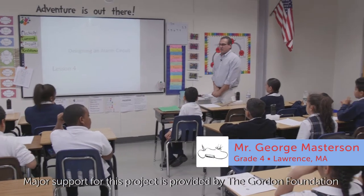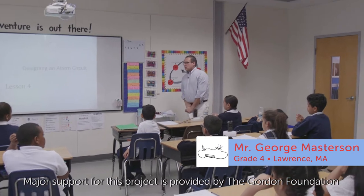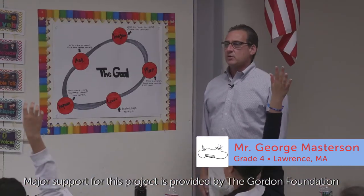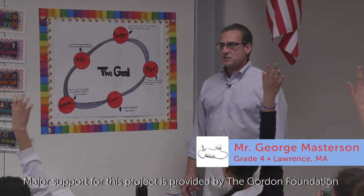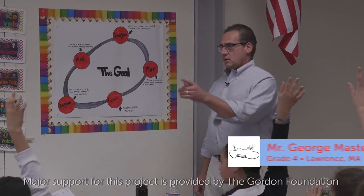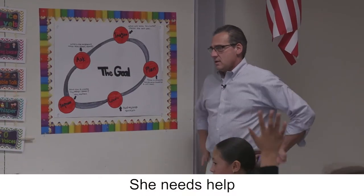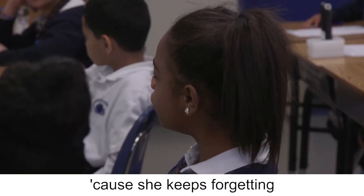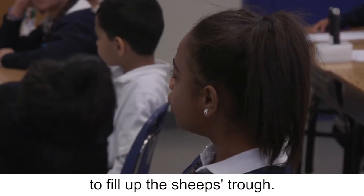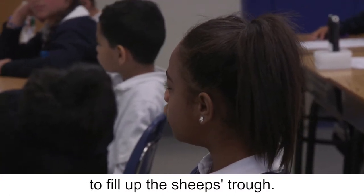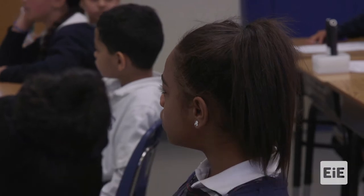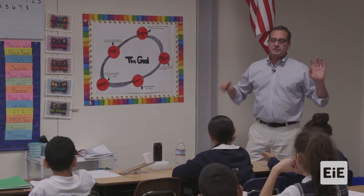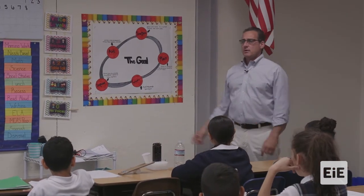Let's take a look at the engineering design process. What's the problem that Emily had? Put yourself in Emily's position. She needs help because she keeps forgetting to fill up the sheep's trough. That's right. She's got an imagined idea that allows her to feed her sheep.